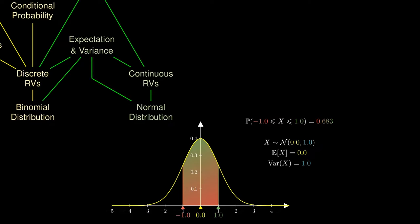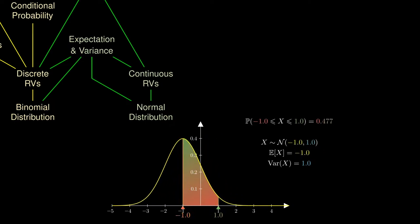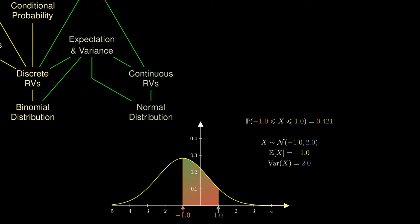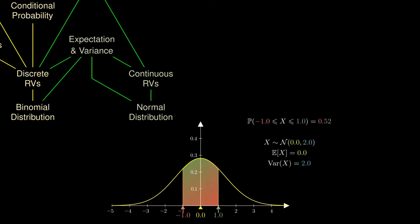If we were to change the mean, the peak of the bell curve would shift accordingly to the mean. And if we were to change the variance, the curve would be more spread out or squished in, since variance measures the amount of spread in the random variable.